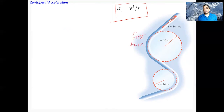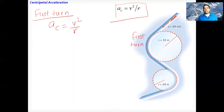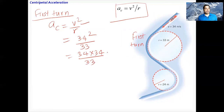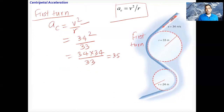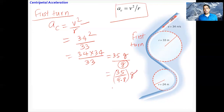For the first turn, radius = 33 m: a_c = v²/r = 34² / 33 = 35 m/s². To express as a multiple of g, divide by 9.8: 35 / 9.8 = 3.6g.